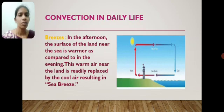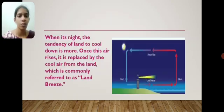Convection in daily life: breeze. In the afternoon, the surface of the land near the sea is warmer. As compared to in the evening, this warm air near the land is readily replaced by the cool air resulting in sea breeze. When at night, the tendency of land to cool down is more. Once this air rises, it is replaced by the cool air from the land which is commonly referred to as land breeze.